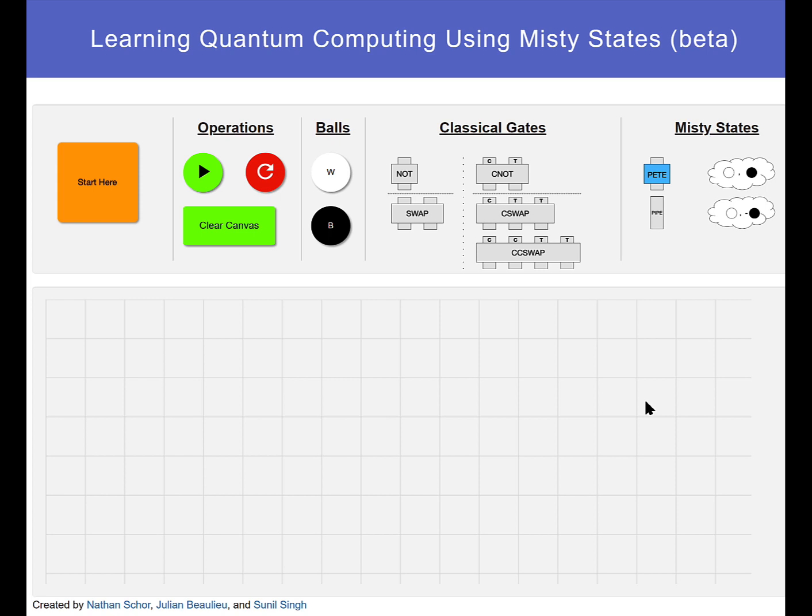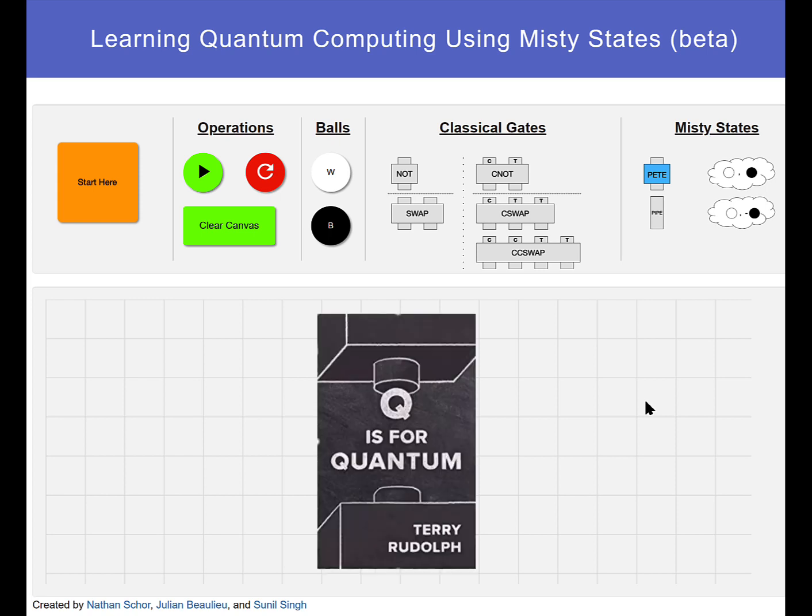We also acknowledged in the previous video the source of this graphical approach. The book Q is for Quantum by Terry Rudolph.